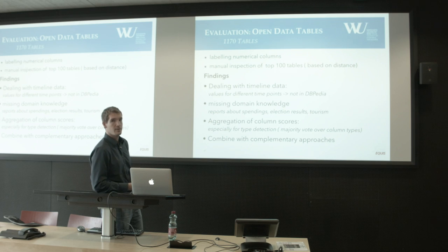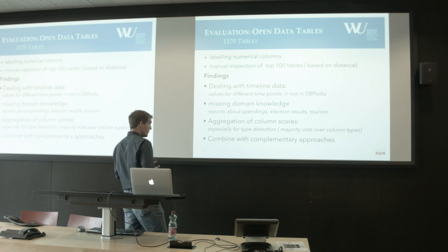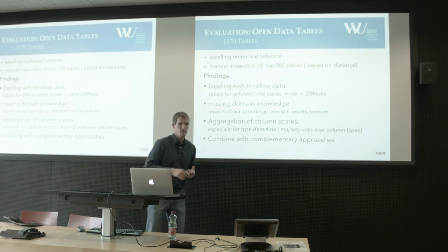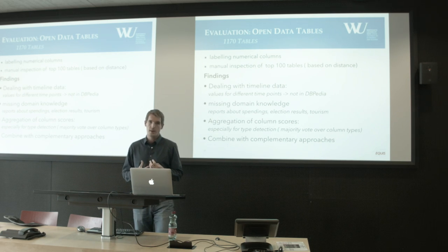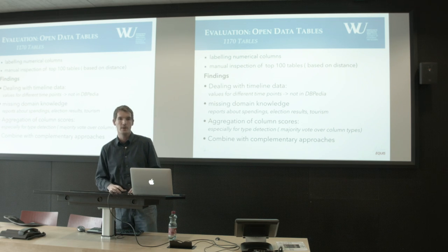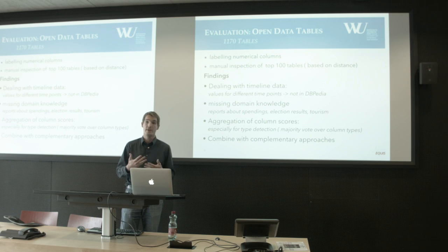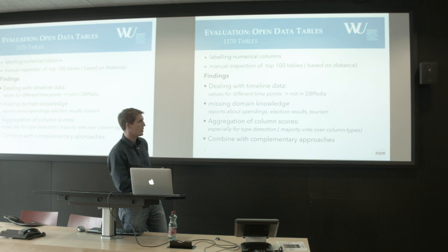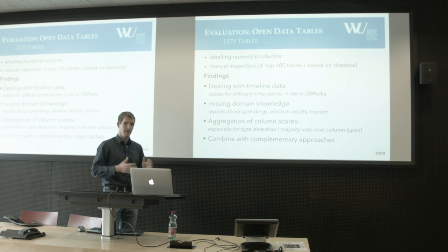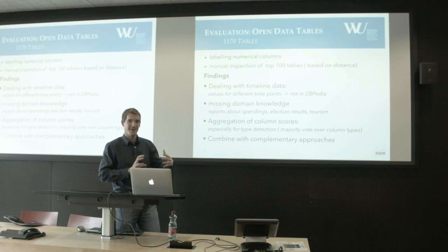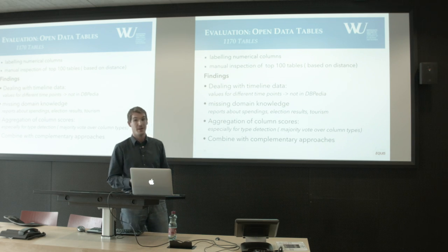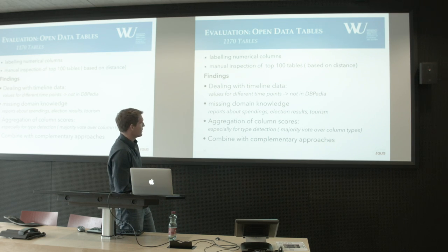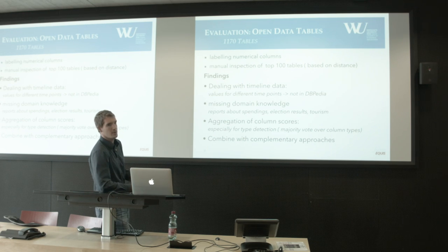So we simply have to extend the knowledge base. One thing that occurred to us is aggregating column scores: if you're bad for one column, maybe looking at neighboring columns and their labels — what they have in common — gives much more evidence to predict that the table is about demographics or people. We also addressed the problem in a very isolated case, just using the bag of numbers without combining it with textual knowledge.